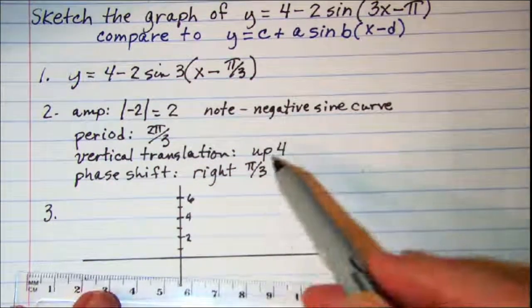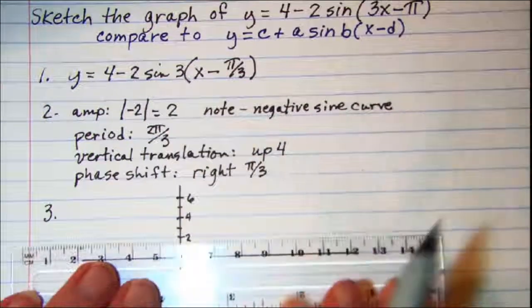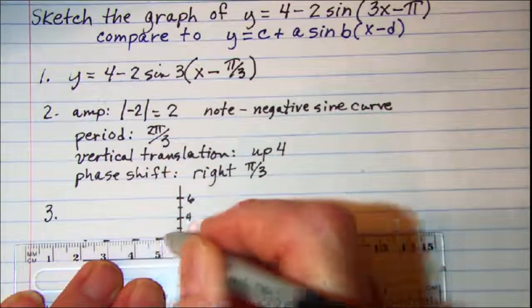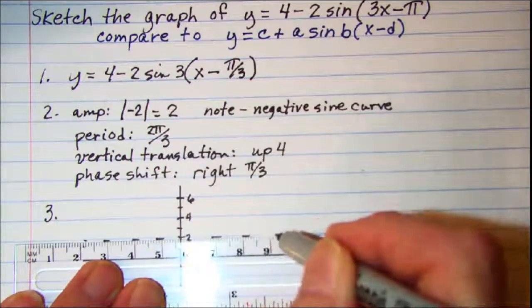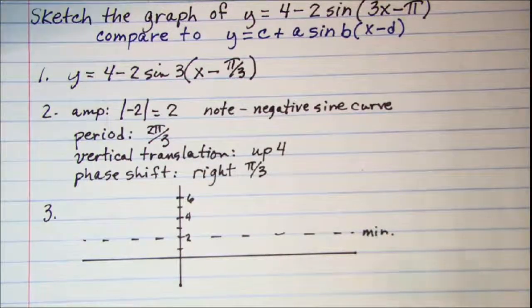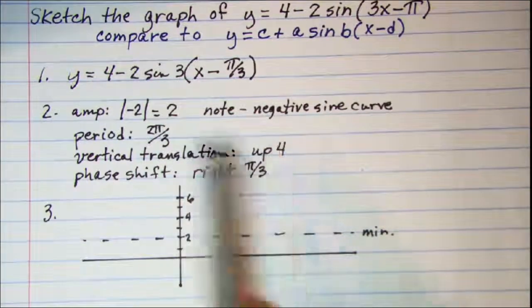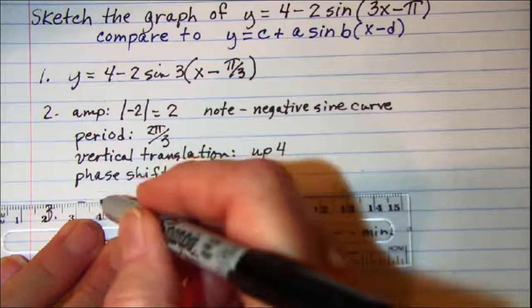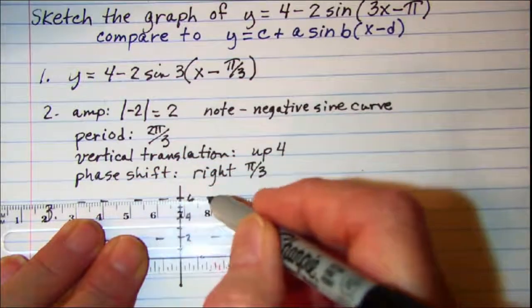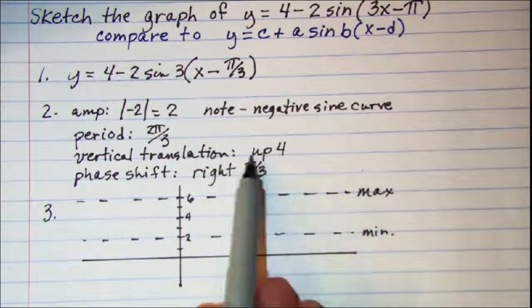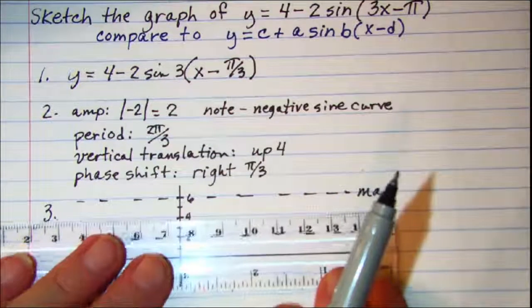So my min 4 minus 2 is going to be here. My max is going to be at 4 plus 2, which is 6. And my center line will be just at the vertical translation which is 4.